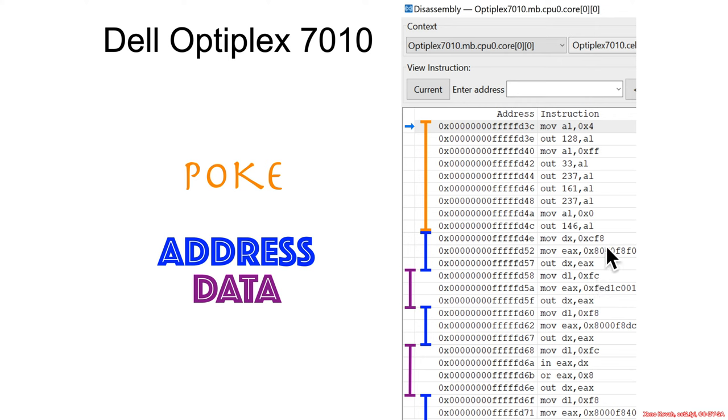Specifically, FED1C001 is written out here to port CFC. This already has DX with CF8 in it, and so this is only writing to DL, the least significant byte. So it's still CFC. CFC is the port in DX right here, and this is the data that is written out to that port.